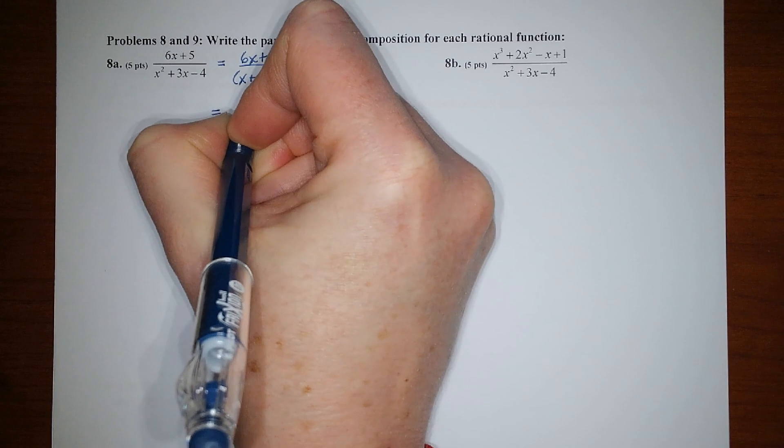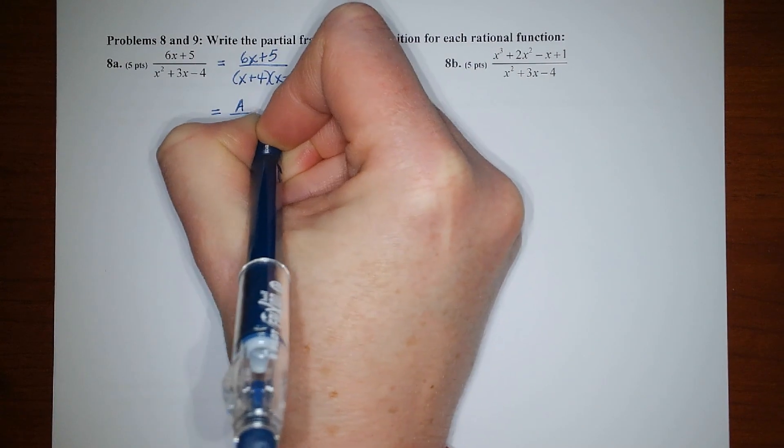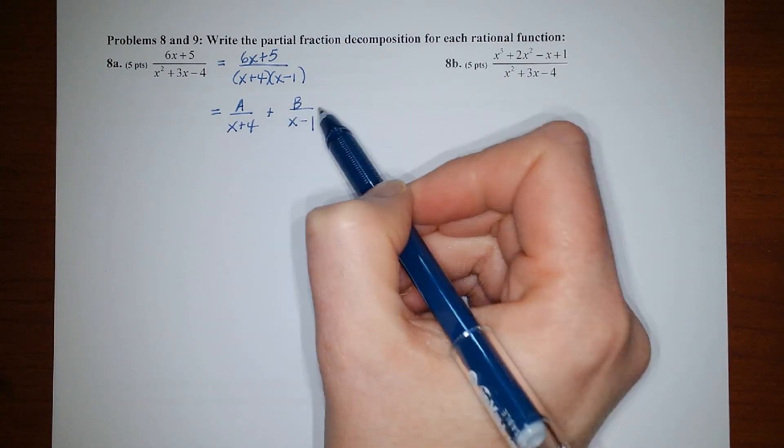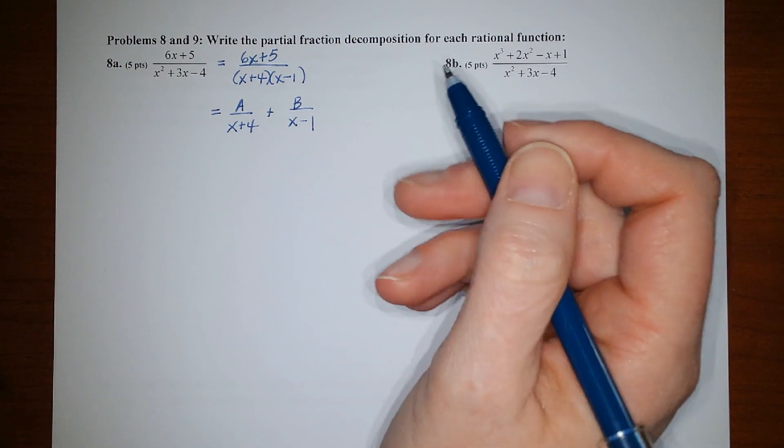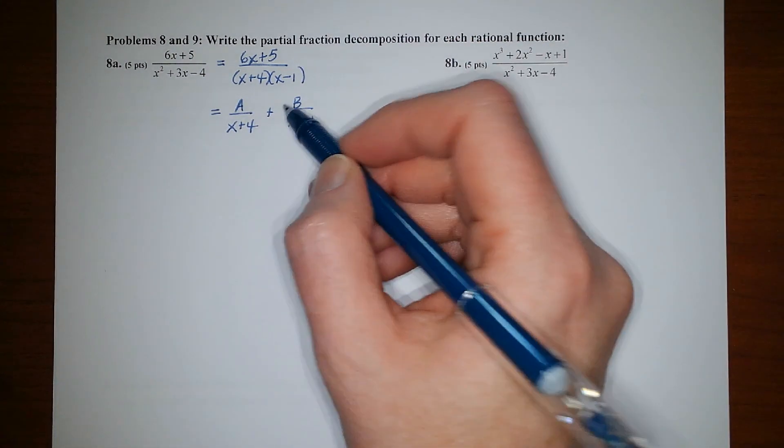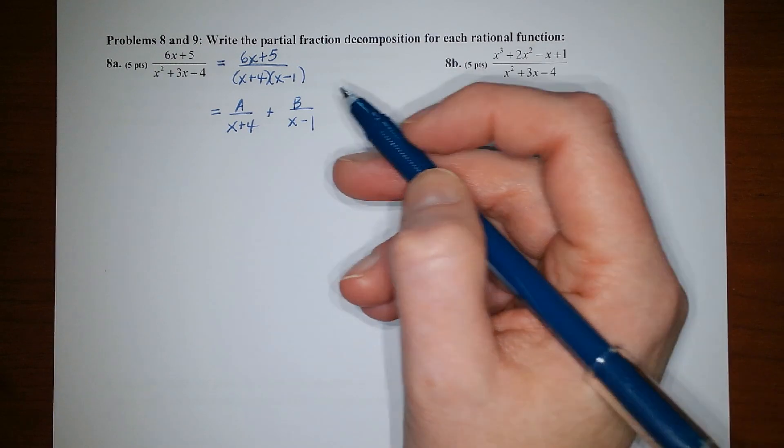And then the form would be a constant over x plus 4 plus a constant over x minus 1. Now, if your form looks just like mine, but A and B are switched around, it's fine. And in the end, what I get for A, you'll get for B and vice versa. But we'll back substitute to our form and get the same answer when it's all done anyway.